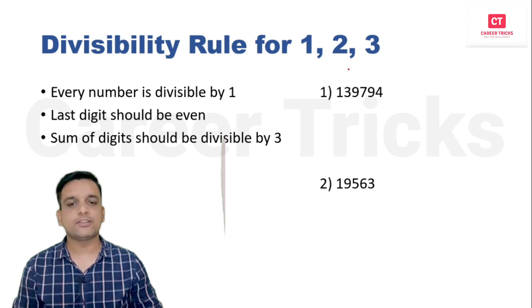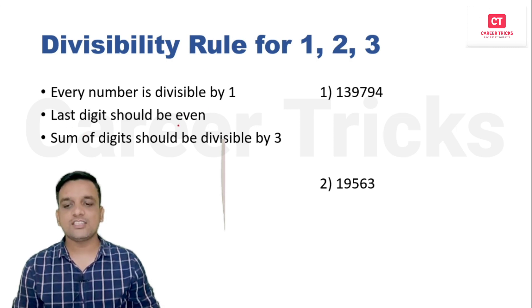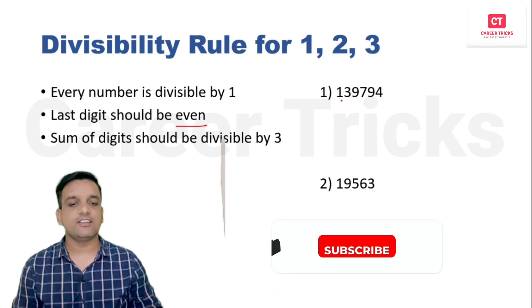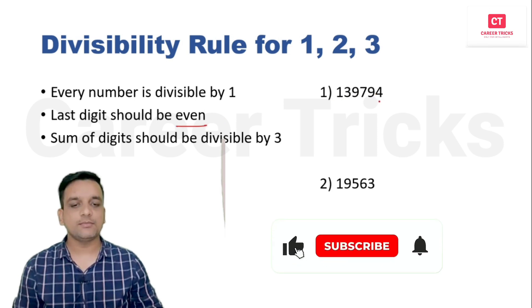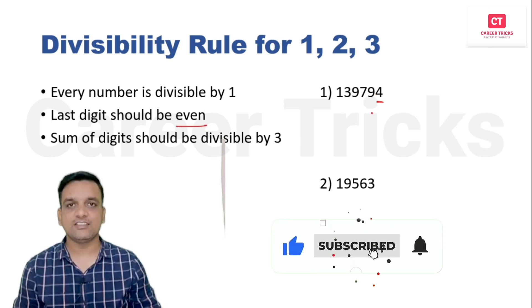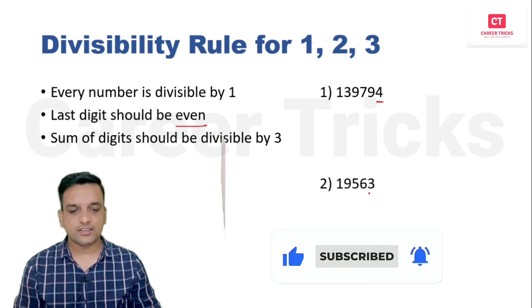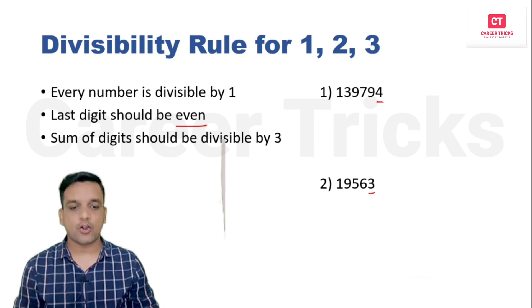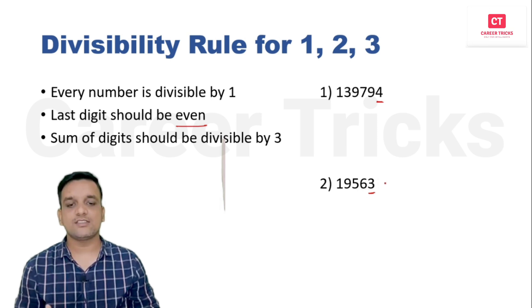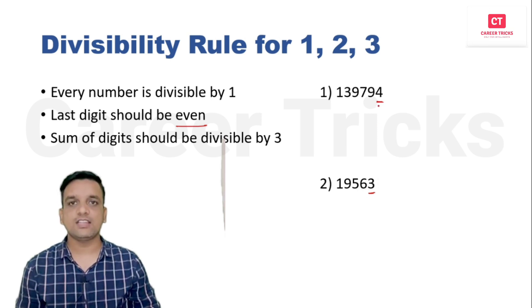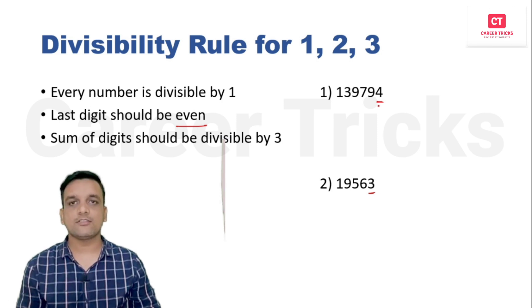Divisibility rule for 2: the last digit should be even. If you take any number and the unit digit is even, then it will be divisible by 2. If the last unit digit is odd, it is not divisible by 2. We simply check the unit digit — if it is even, divisible by 2; otherwise, not.